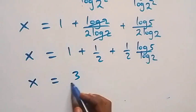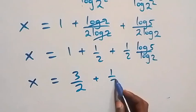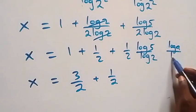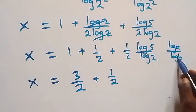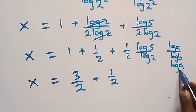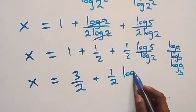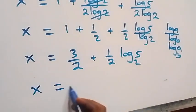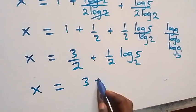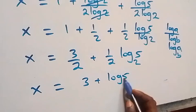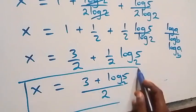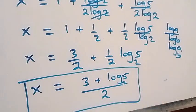Applying the change of base formula, log a over log b equals log base b of a. So log 5 over log 2 equals log base 2 of 5. This gives x equals 3 over 2 plus log base 2 of 5 over 2, which can be written as x equals (3 + log base 2 of 5) over 2.